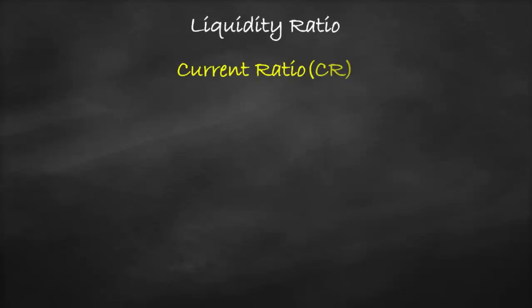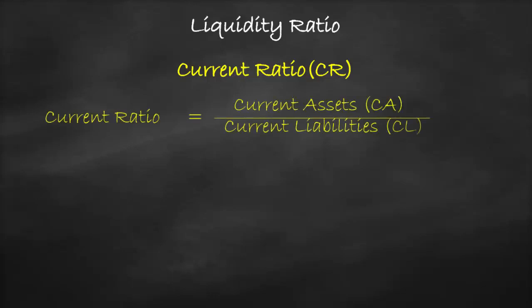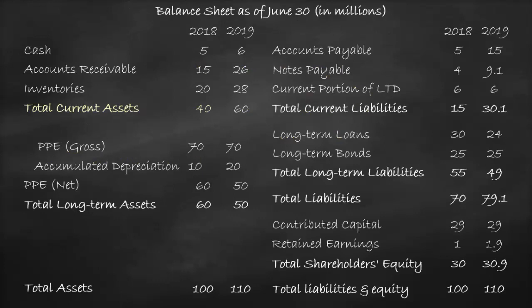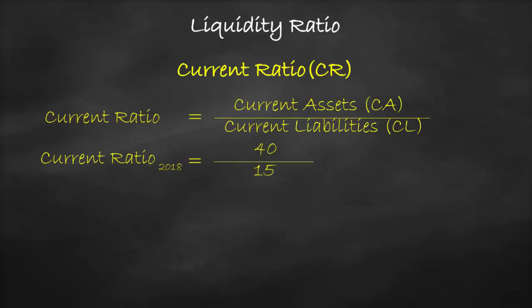An example of the liquidity ratio is the current ratio. The current ratio formula is current assets divided by current liabilities. We get both the current assets and current liabilities from the balance sheet. So let's calculate the current ratio for the year 2018. Current assets are equal to $40 million divided by current liabilities of $15 million, which is equal to 2.67 times.